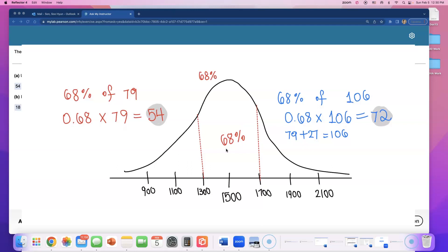You stretch out to 95% when you are doing two standard deviations, and if you go all the way out to three standard deviations, like from 900 to 2100, then you're looking at 99.7%. For this particular problem we were just looking at the one standard deviation mark.